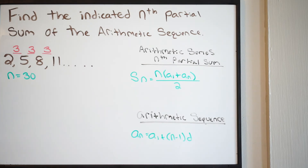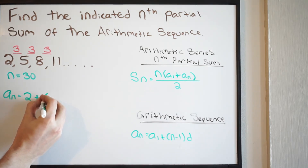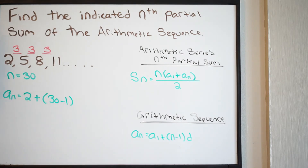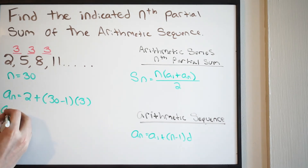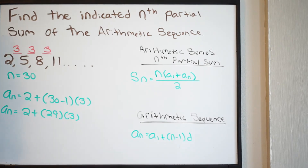Our goal right now is to find the value of the 30th term in this arithmetic sequence. Using our equation: A(N) = A(1) + (N - 1) * D. A(1) is our first term, which is 2. N is 30, and D, our common difference, is 3. So we get A(N) = 2 + (30 - 1) * 3, which gives us 2 + 29 * 3.